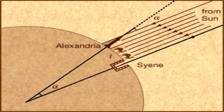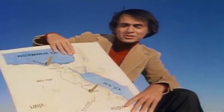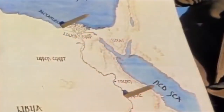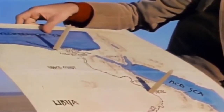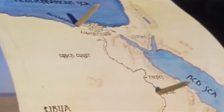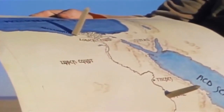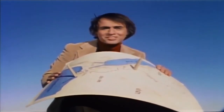Eratosthenes, Carl Sagan, and other globe proponents reason that this result is impossible on a flat earth. To quote Carl Sagan: 'If at a certain moment each stick casts no shadow at all, that is perfectly easy to understand, provided the earth is flat. If the shadow at Syen is a certain length and the shadow at Alexandria is the same length, that also makes sense on a flat earth. But how could it be,' Eratosthenes asked, 'that at the same instant there was no shadow at Syen and a very substantial shadow at Alexandria?' The only answer, he claimed, was that the surface of the earth is curved.